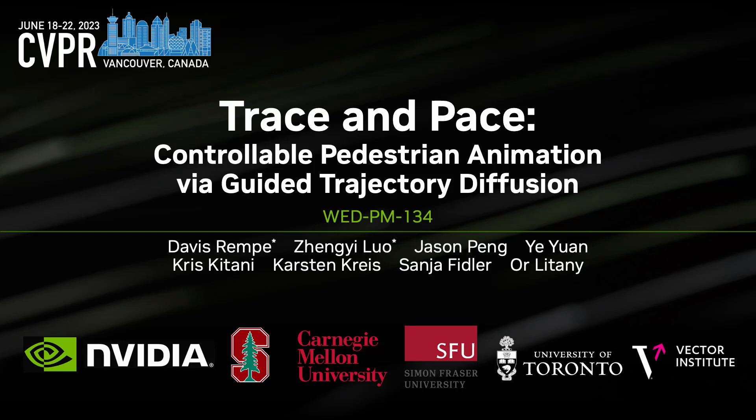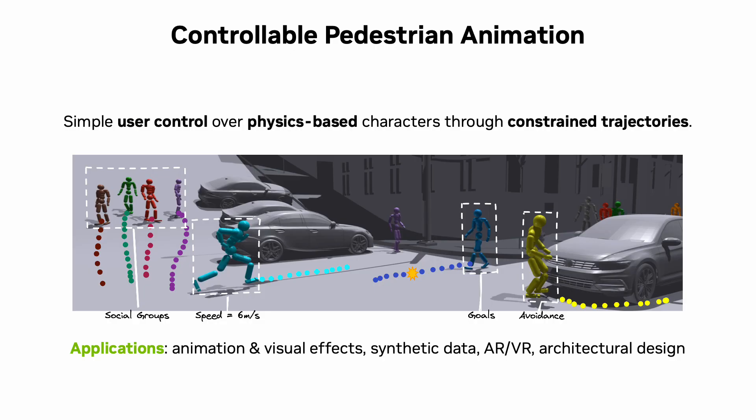Hello, I'm Davis and I'll be presenting our work Trace and Pace on Controllable Pedestrian Animation. We're interested in realistically generating pedestrian animations in a way that's easily controllable by a user. We want a system where a user can constrain the trajectories of pedestrians — things like goals to reach and obstacles to avoid — and get realistic full-body motion as output. This is useful for applications like animation and synthetic data generation.